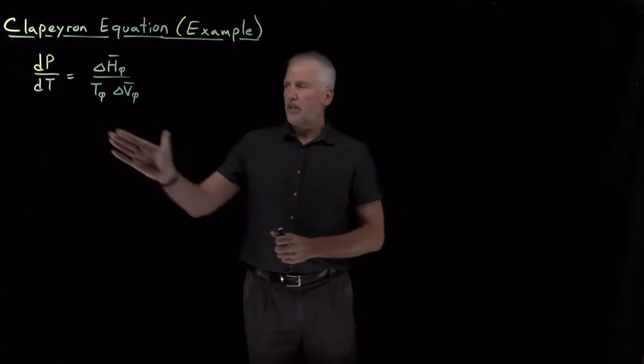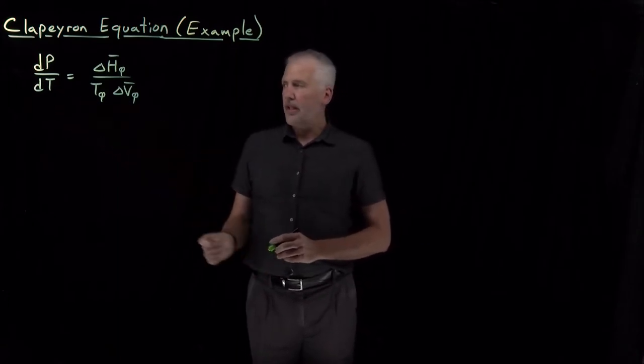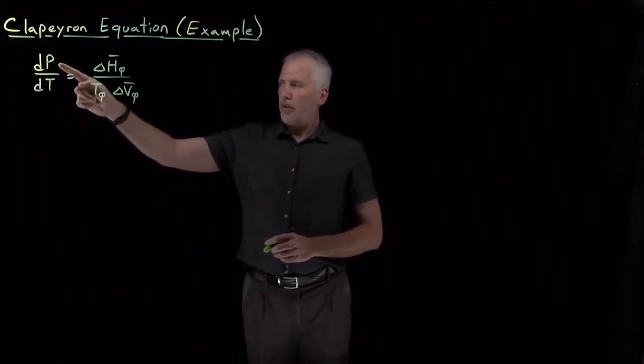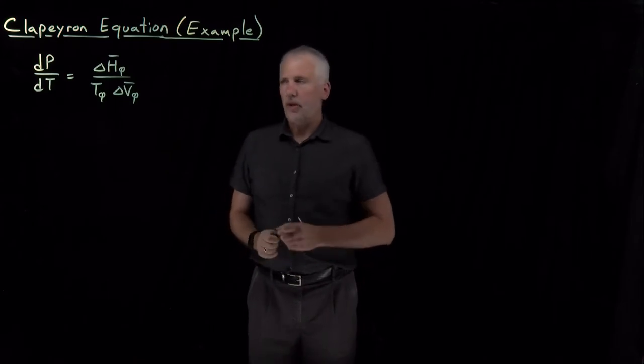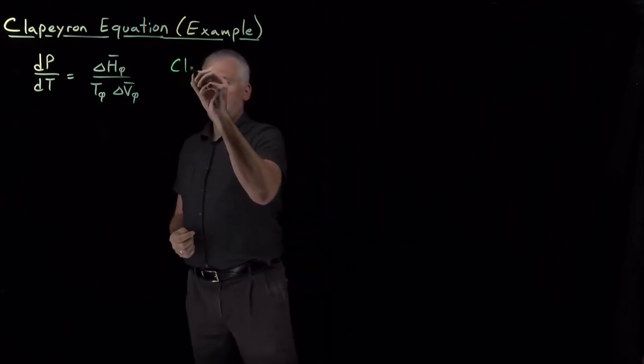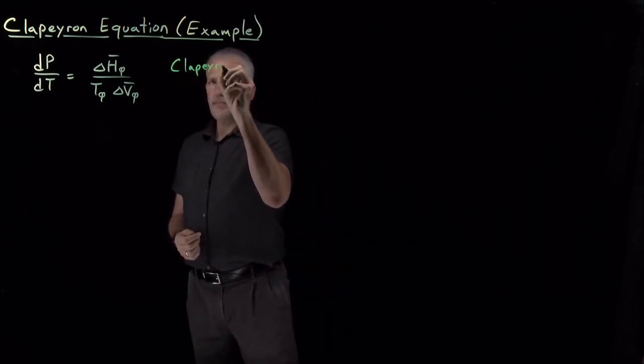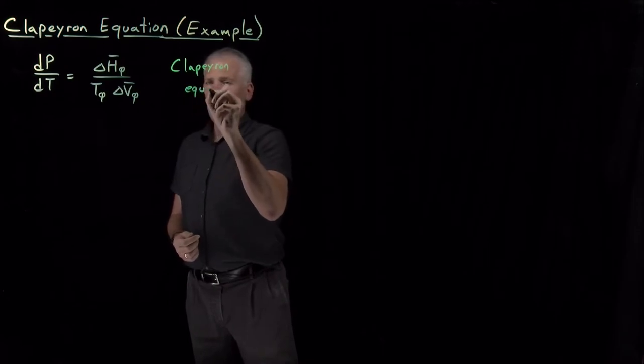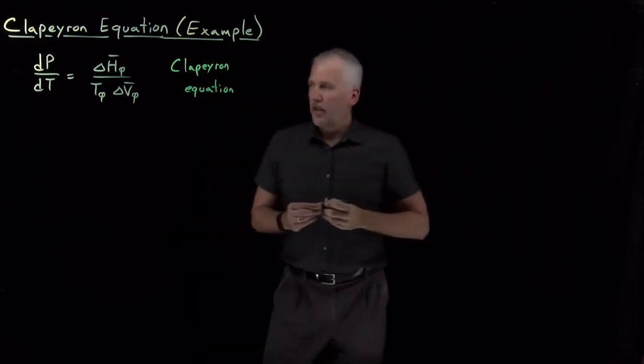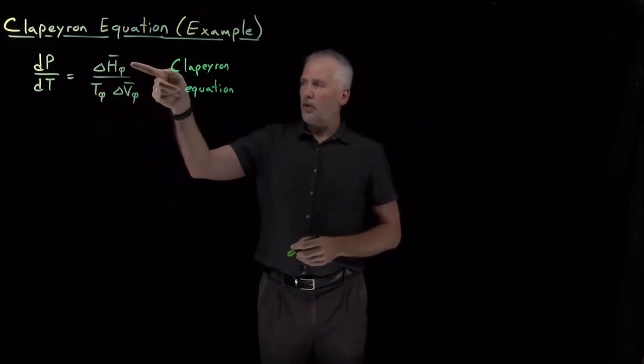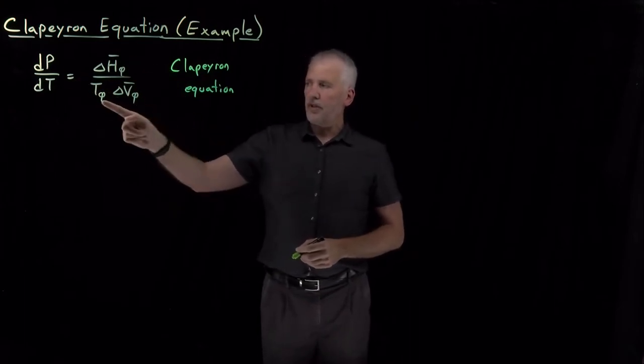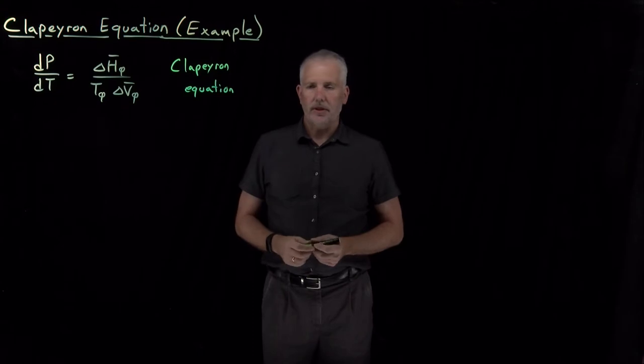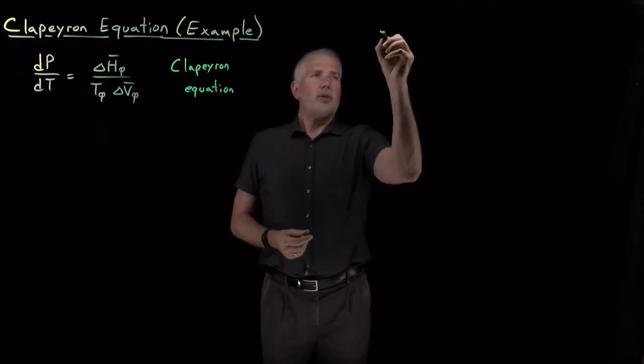We've seen now this equation that tells us the slope of one of these coexistence lines on a phase diagram. That equation is called the Clapeyron equation. And we can determine that slope if we know the enthalpy, the change in volume, and the temperature of a phase transition. So we'll see how that works with an example.